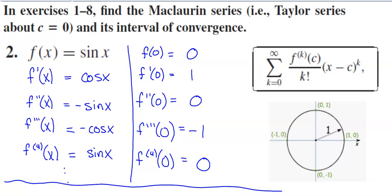In this video, we will set our sights on developing Maclaurin series representations for two functions: sine of x and cosine of x. We're going for a Maclaurin series representation for sine of x first. A Maclaurin series is a Taylor series based at zero, so you do need to know the definition of a Taylor series based at c in order to do this.